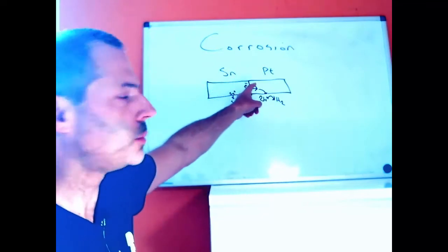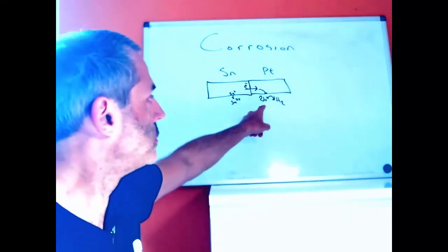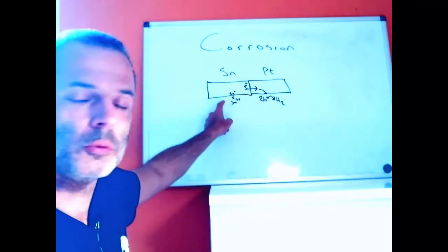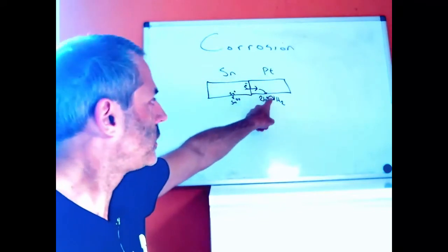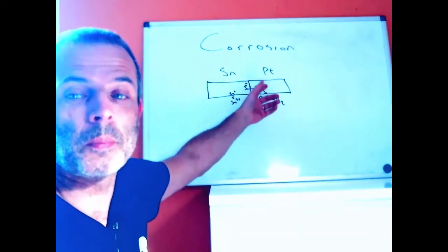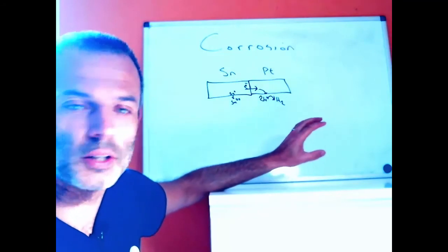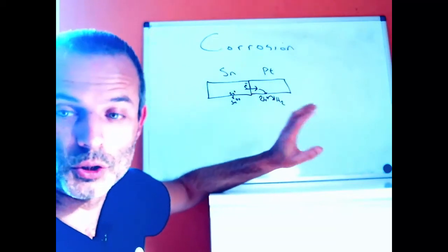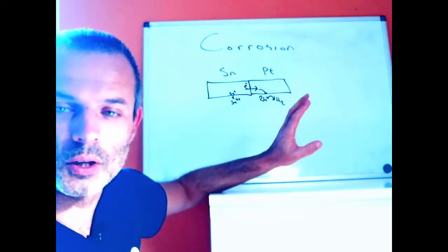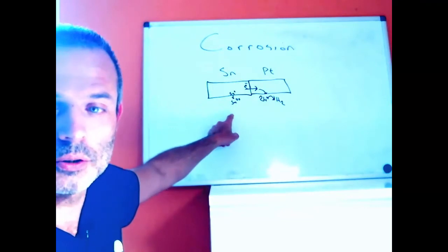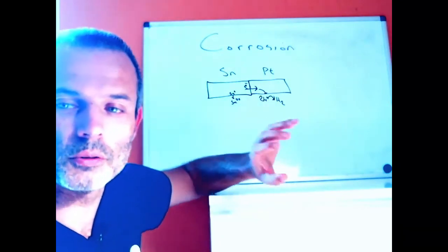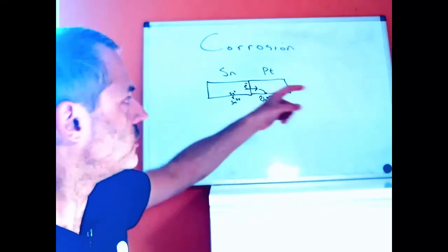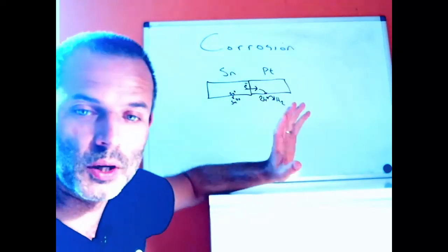But if it's attached to a piece of platinum, the overpotential for hydrogen formation on platinum is much lower, and so the electrons given out by the tin can react at the surface of the platinum to make corrosion occur. The tin is being oxidized to Sn²⁺ and hydrogen is being reduced to H₀. We have an electrochemical cell that is short-circuited, doing no work.